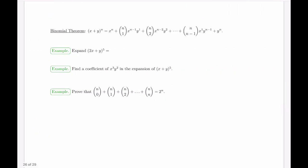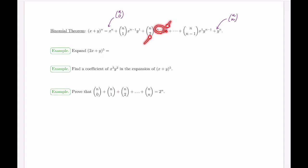In general, we have the result called the Binomial Theorem, which writes in general notation for power n what the expansion will be. The first and last coefficients are n choose 0 and n choose n. For every coefficient in the middle, you pick some number of brackets to contain y — whatever that number is, it corresponds to the power of y, and n minus that number is the power of x.